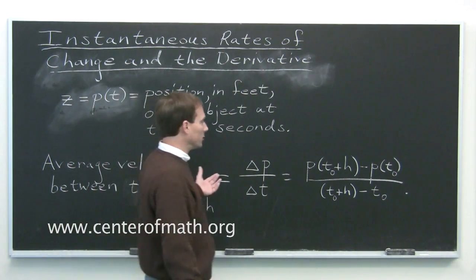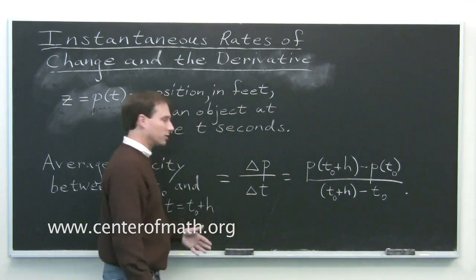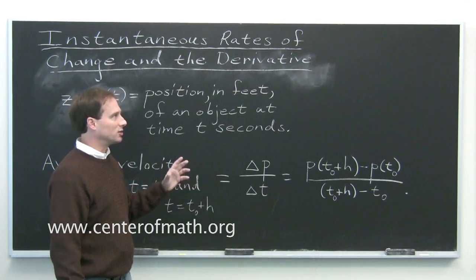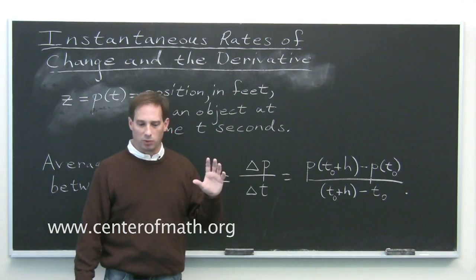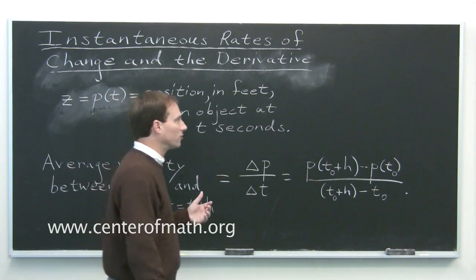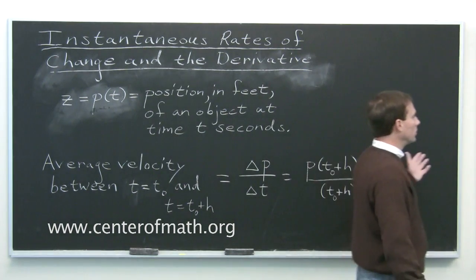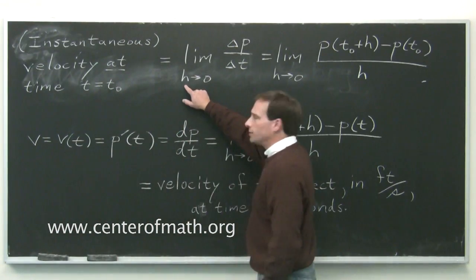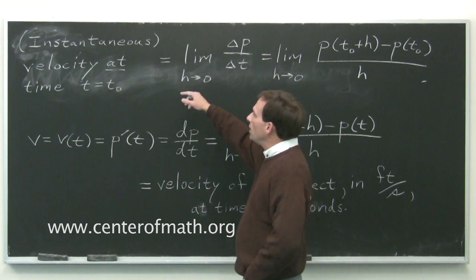But mathematically what we can do, instead of having to know physical characteristics of cars and say, what's a small enough change in time so that we believe that the velocity couldn't have changed much over that interval, mathematically we can do something called taking the limit as we let this change in time approach zero.